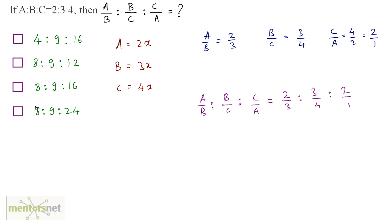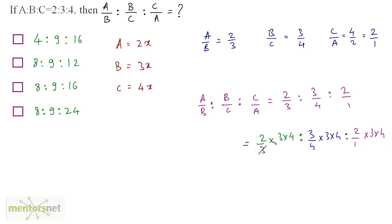Well, none of our answers seem like those, so we have to convert these. There is a property of ratios which tells us that if you multiply each of the terms in the ratio with a common term, the ratio does not change. So what I can do is multiply each of the terms with the LCM of the denominators, which is 3 times 4. So 2 by 3 times 12 is to 3 by 4 times 12 is to 2 by 1 times 12. This 3 and 3 get cancelled: 2 times 4 is 8. This 4 and 4 get cancelled: 3 times 3 is 9. And 2 times 3 is 6, times 4 is 24. So 8 is to 9 is to 24 — that's our answer, option D.